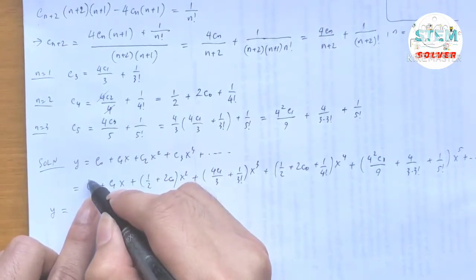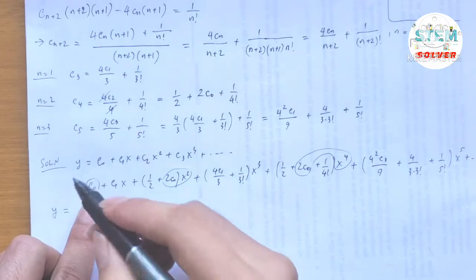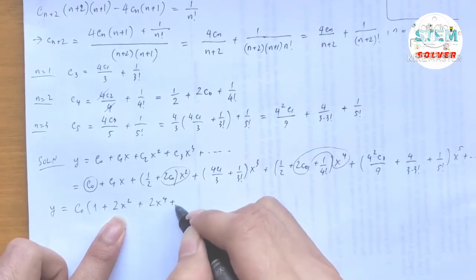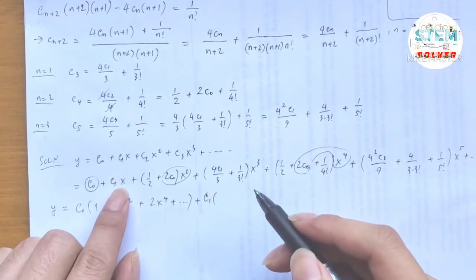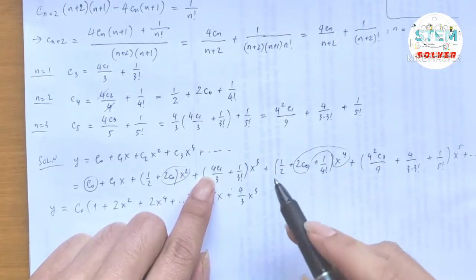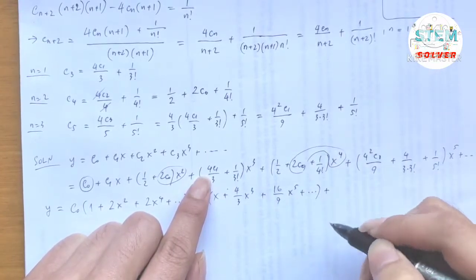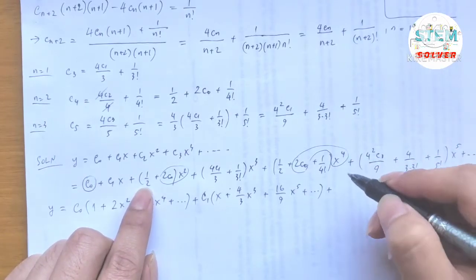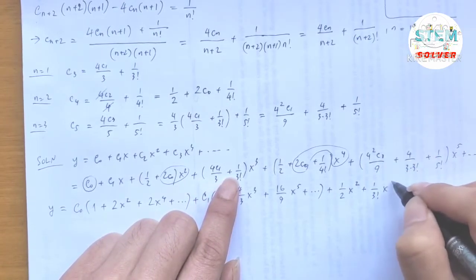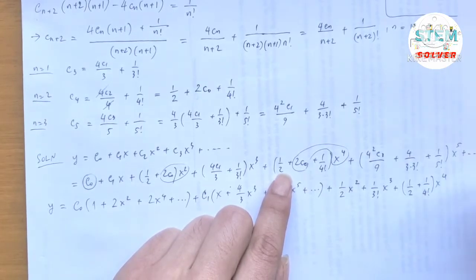Grouping by c₀: c₀ times (1 + 2x² + 2x⁴ + …). Grouping by c₁: c₁ times (x + (4/3)x³ + (16/9)x⁵ + …). Plus the particular solution terms: one-half x² + (1/3!)x³ + (one-half + 1/4!)x⁴ + … .